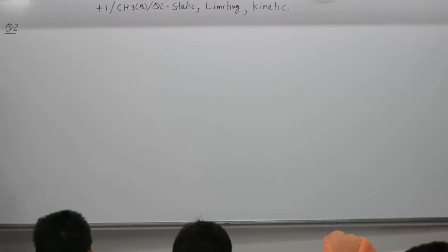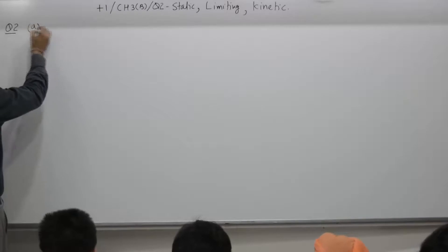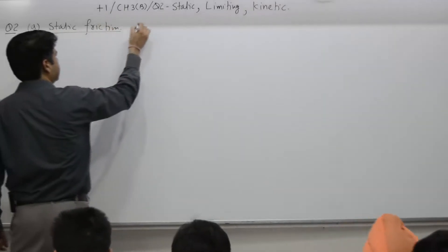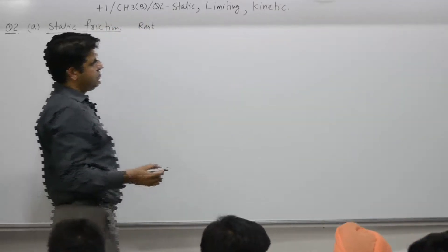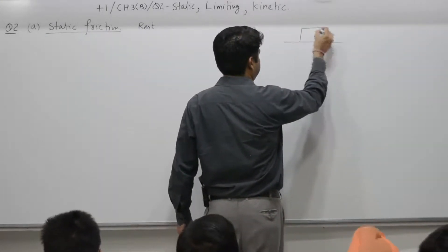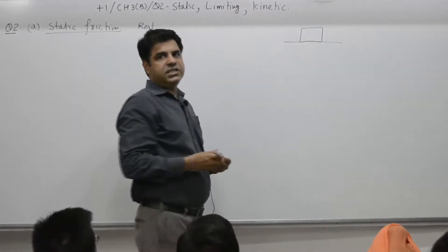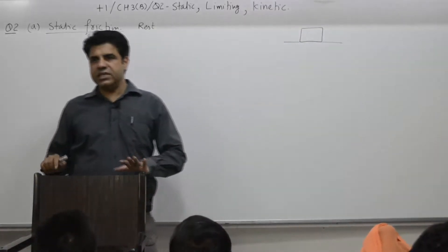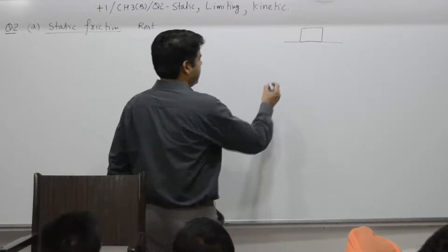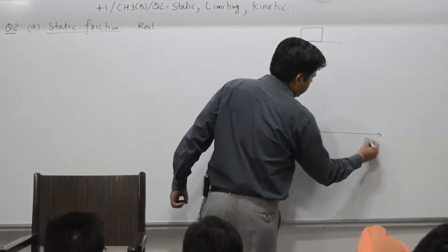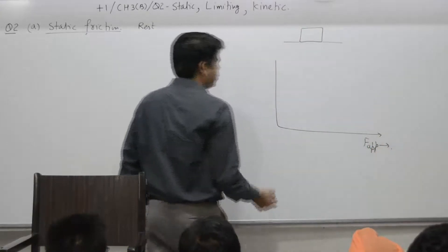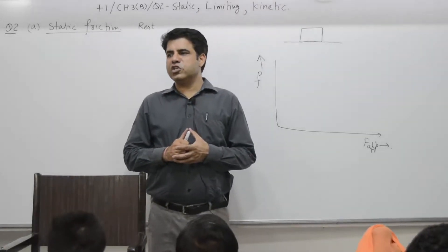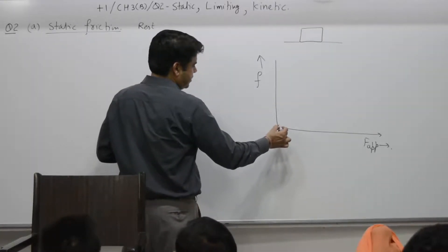First part: static friction. Static means 'at rest.' So we perform an experiment — there is an object, like a chair, that is at rest. We make a graph. Applied force is 0, so there is no force applied at this point, and the opposing friction force is also 0. Applied force is 0, friction force is also 0.